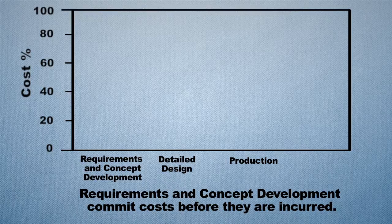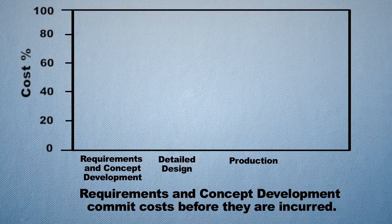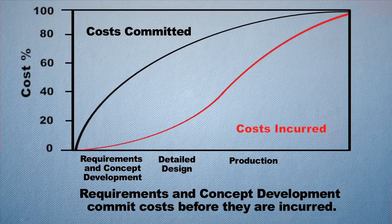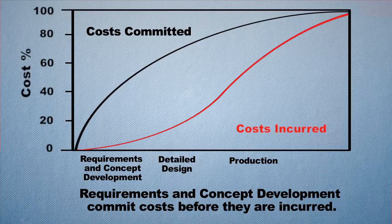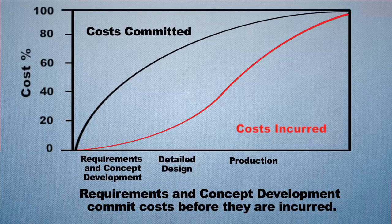On this graphic, the x-axis is the timeline from beginning — pre-phase A — all the way through to the end of phase F. The y-axis is cost by percentage of overall mission or system development cost. You can see that early on, following the bottom curve, as you're going through and defining requirements, you're not spending a lot of money. You only have a small team, mainly systems engineers, so the actual cost incurred is fairly insignificant.